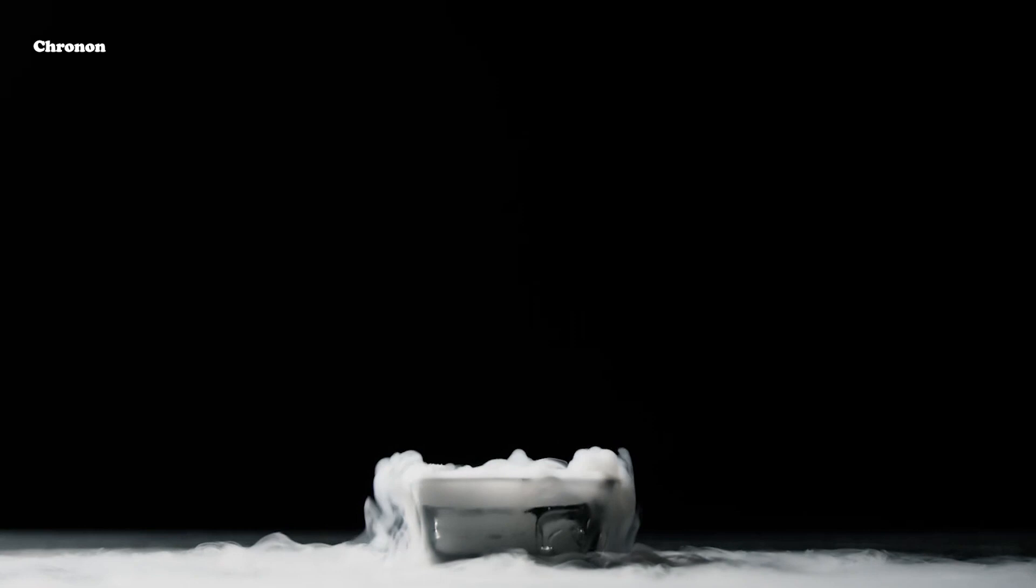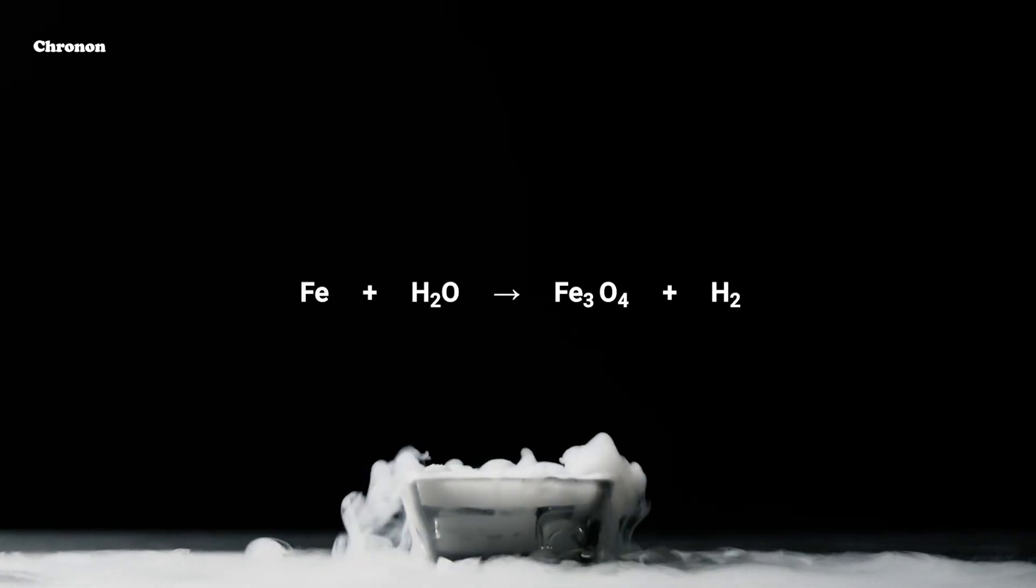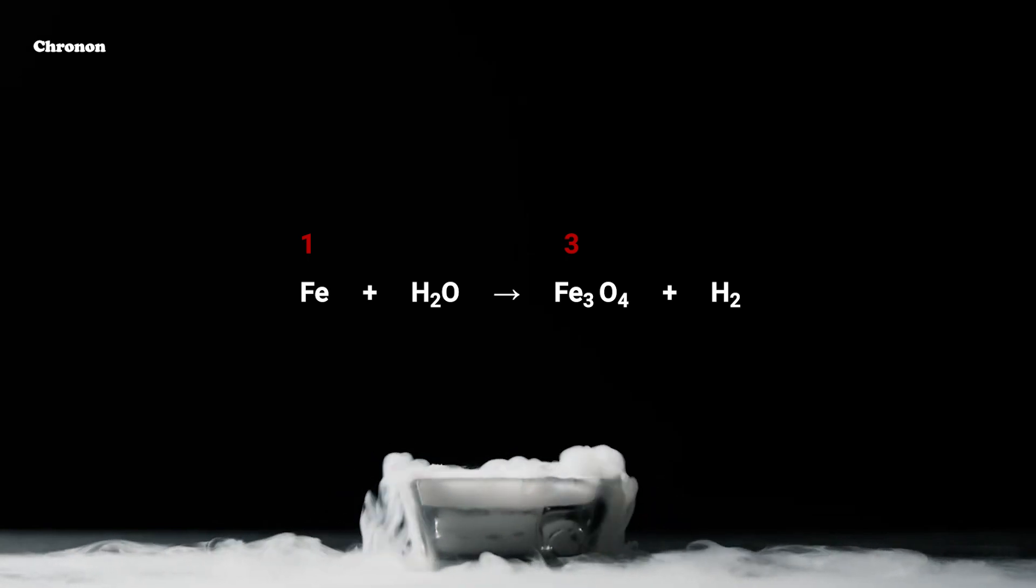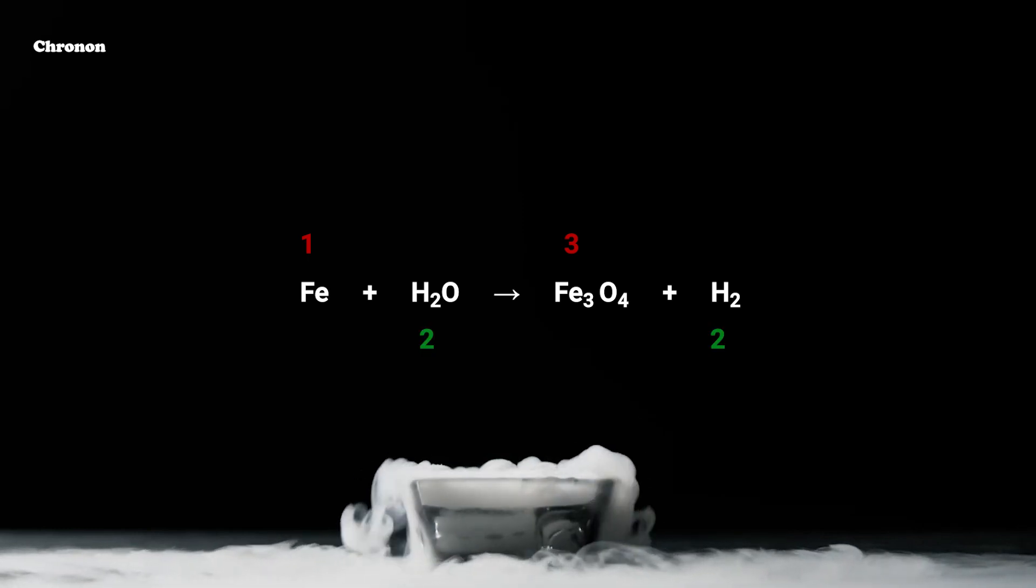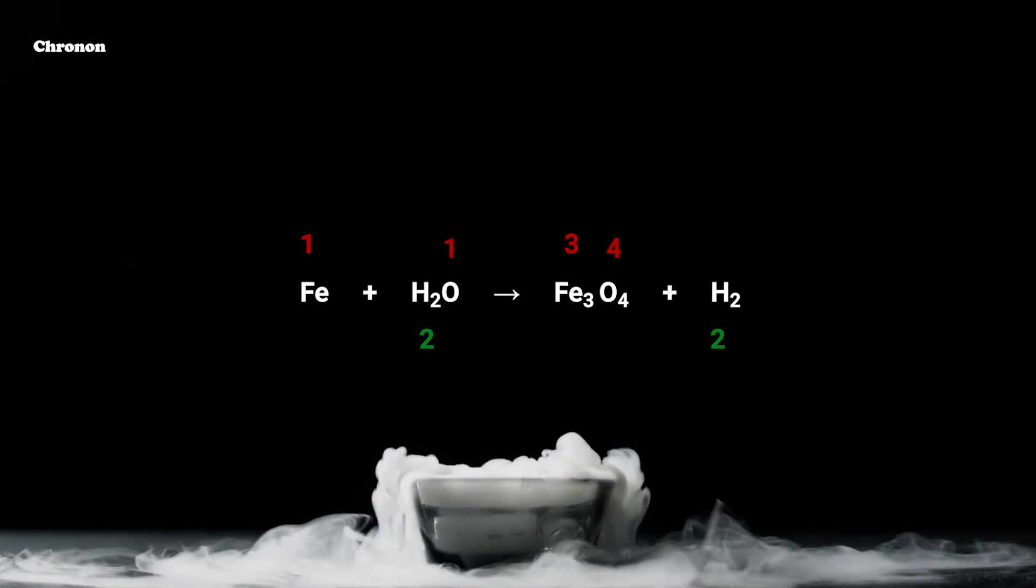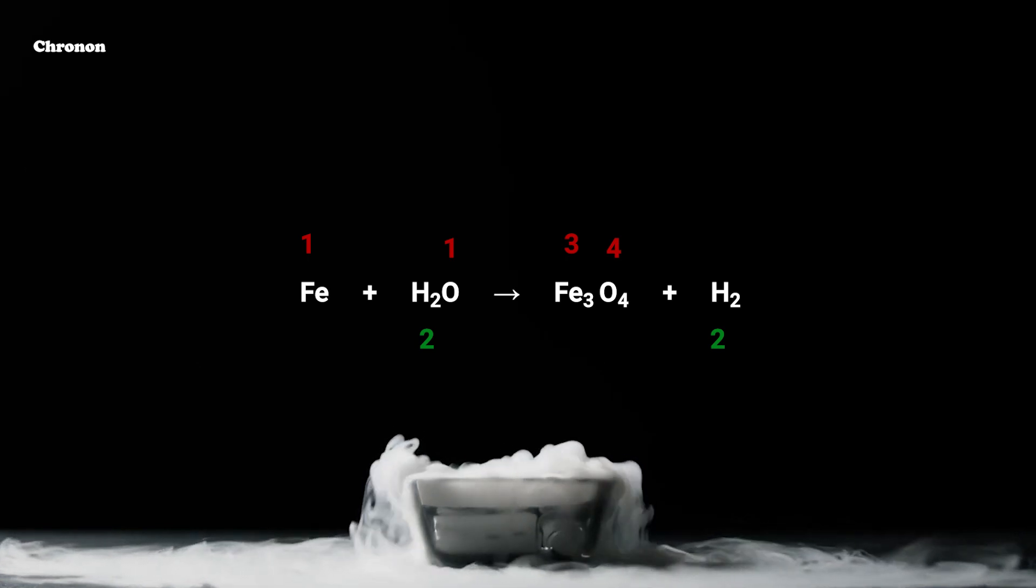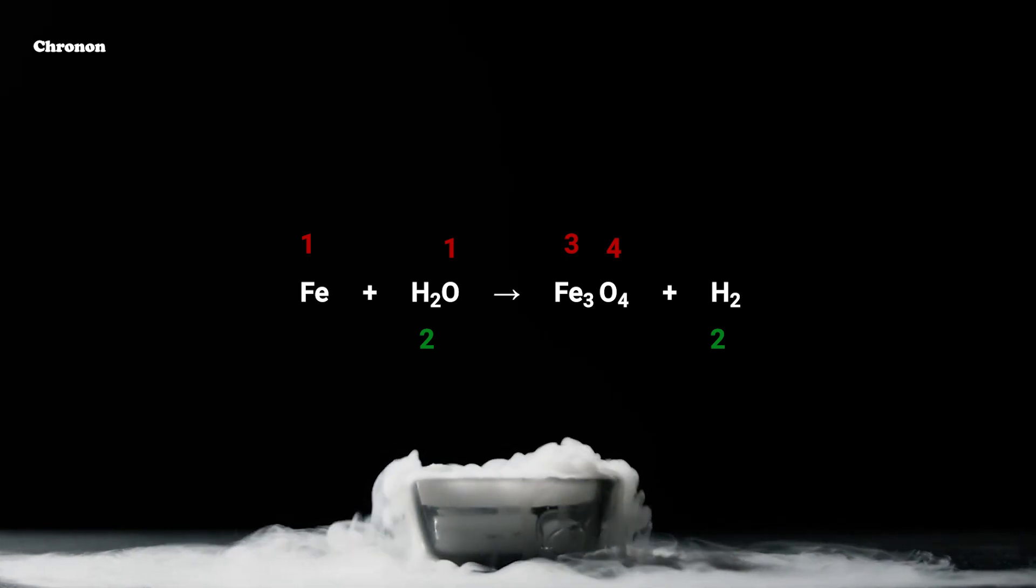Step 2: Now we have to list the number of atoms of different elements present in the unbalanced equation. In this equation, we can see that there is one iron atom in reactant and three iron atoms in product. There are two hydrogen atoms in reactant and products. The oxygen atom is only one in reactant and four in the product. This concludes that this equation is required to be balanced.